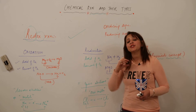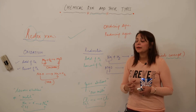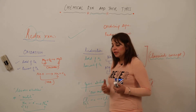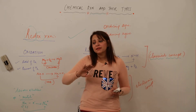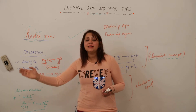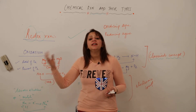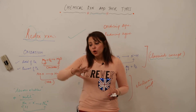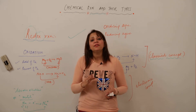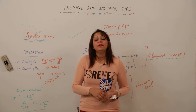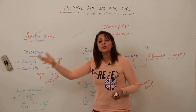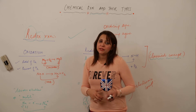An oxidizing agent is one that oxidizes another substance and in return itself gets reduced. A reducing agent, as the name suggests, reduces the other substance and itself gets oxidized. So in a redox reaction we have CuO + H₂ forming Cu + H₂O.